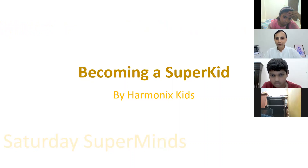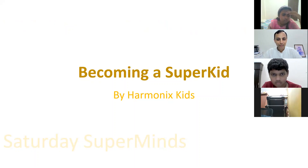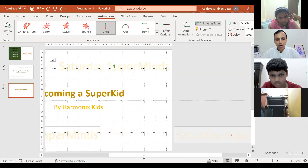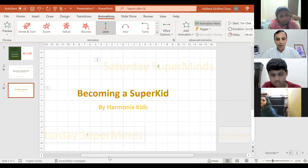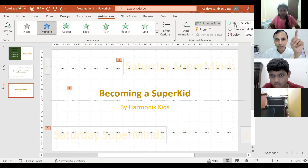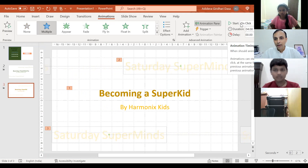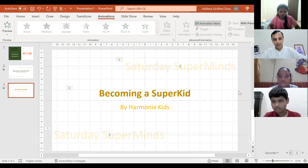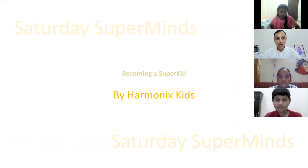Yeah, I've used this in some places. Now what's happening is all the animations are occurring one after the other. But I want all of them to happen simultaneously. Select the animations, go to 'Start' in the menu, click on 'With Previous' — that means all of them will happen simultaneously. Now let's try — press F5.